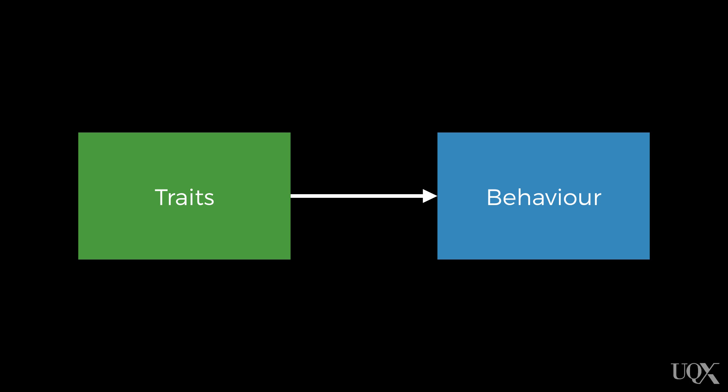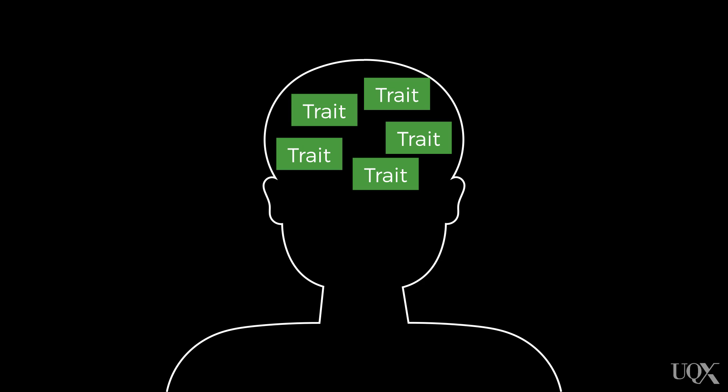Personality traits are not just descriptive patterns of behaviour. Trait theorists think that traits are the factors that are responsible for causing patterns of behaviour. They think that traits are things that reside in our brains.